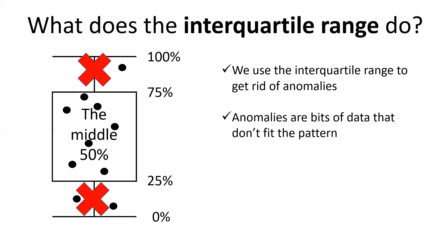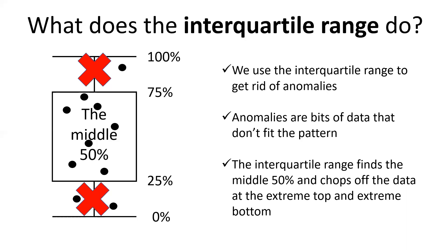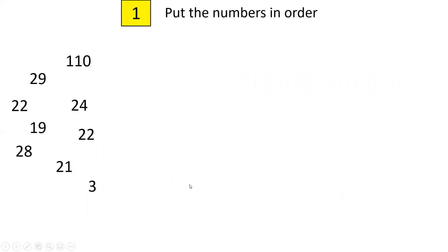So just to recap, we use the interquartile range to get rid of anomalies. Anomalies are bits of data that don't fit the general pattern and the interquartile range finds the middle 50% and you chop off the data at the top 25% and the bottom 25%.